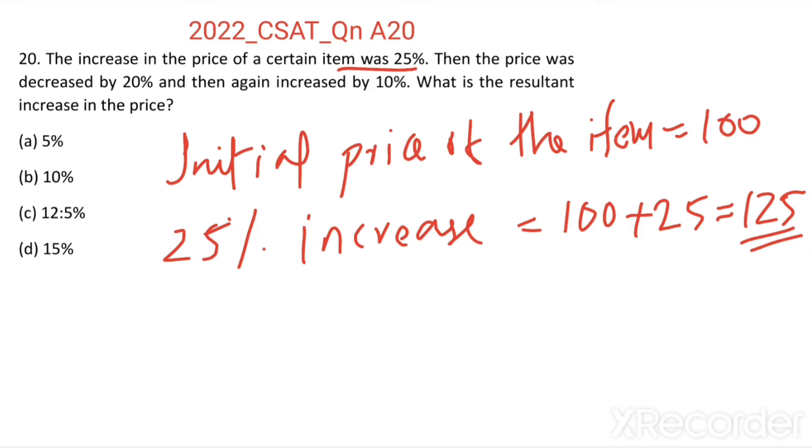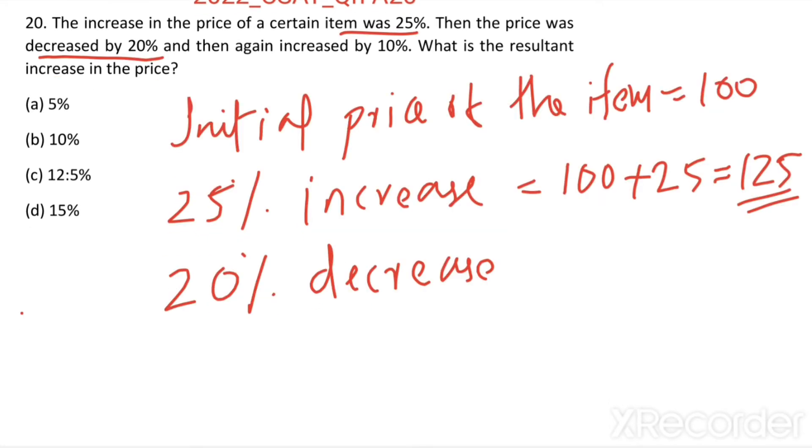Then decreased by 20%. 20% decrease. 20% decrease from 125. So what is the 20% of 125?